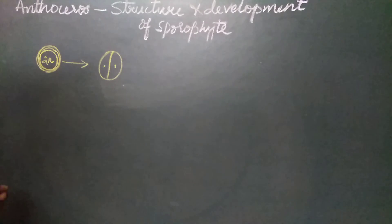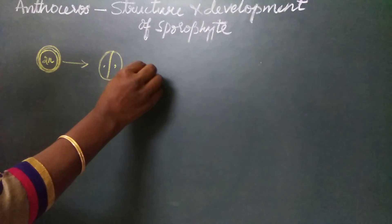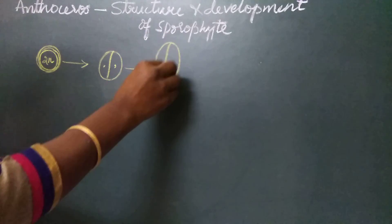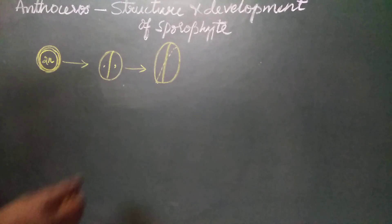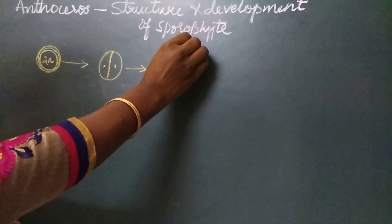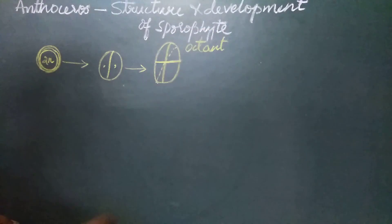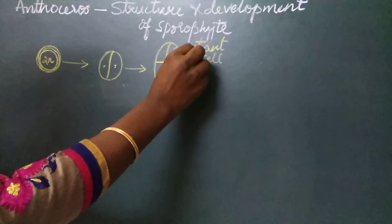Taking the example of Anthoceros levis: the first vertical division occurs, which results in the formation of two cells. Another division occurs at right angles to the first vertical division, which results in the formation of four cells. All four cells divide transversely and an octant stage — an eight-celled stage — is formed.